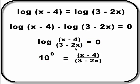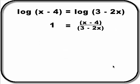10 to the 0 equals, this is the target number, right? x minus 4 over 3 minus 2x. And 10 to the 0 is 1. And give me a second, let me get some working room here. Nice.